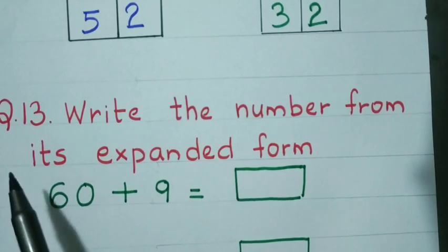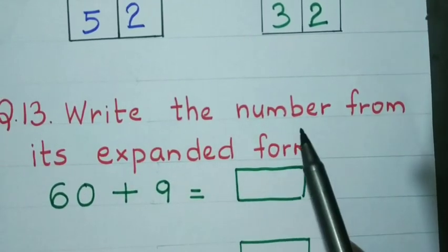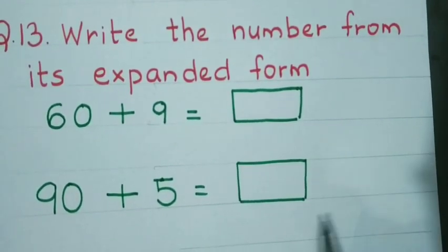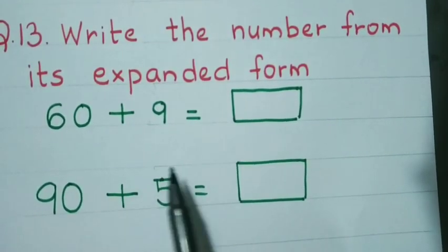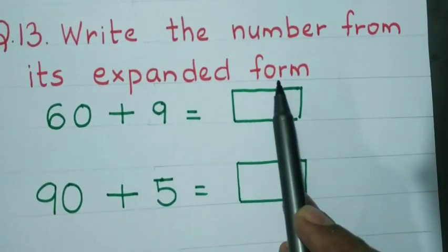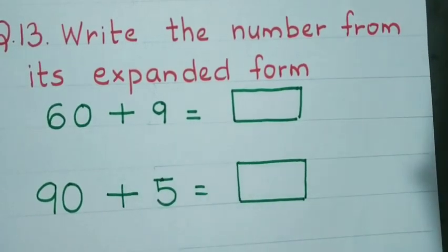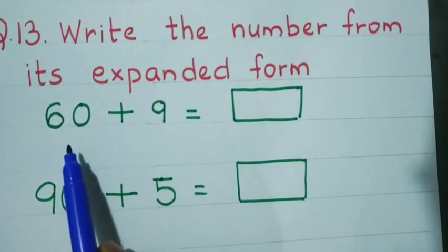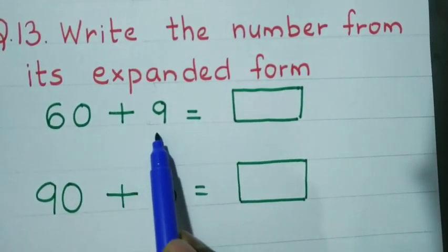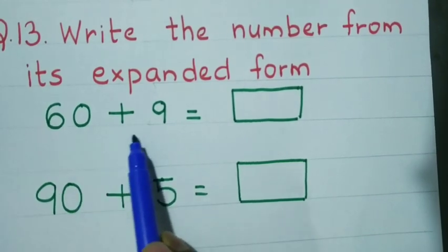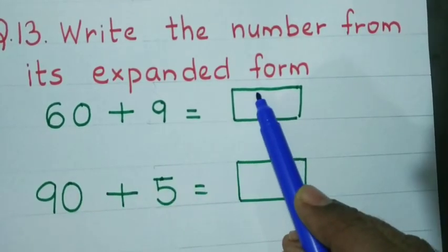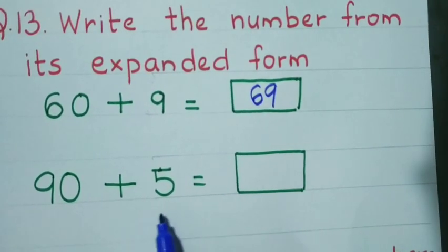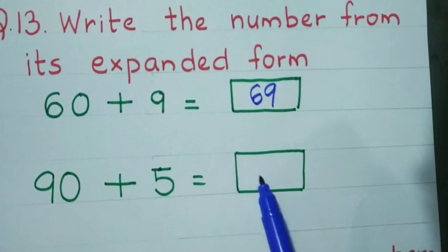Question number 13: Write the number from its expanded form. The expanded form is given and you have to add the numbers and write the result. It is very easy — by reading only you can do it. 60 plus 9 is 69. 90 plus 5 is 95.